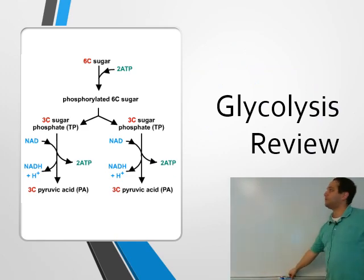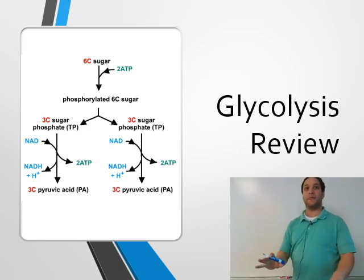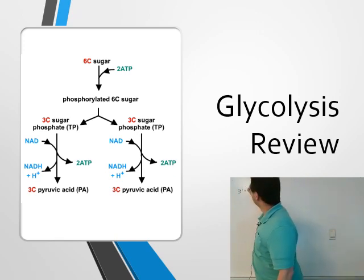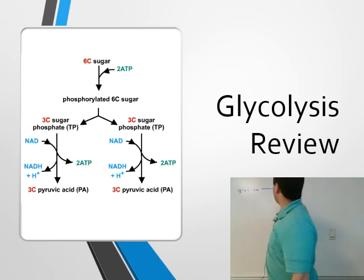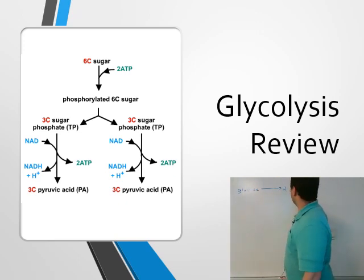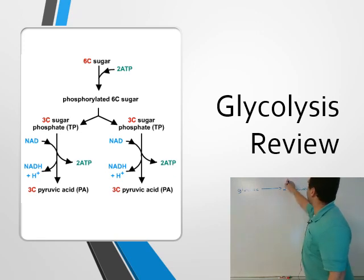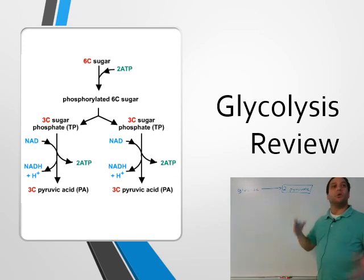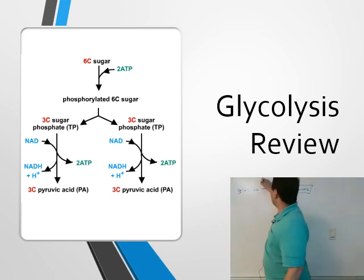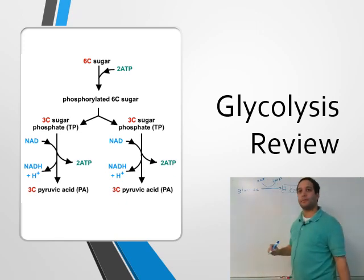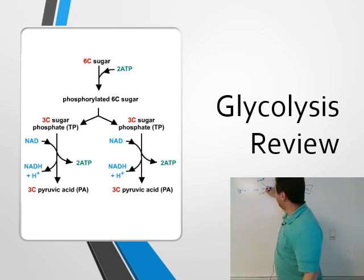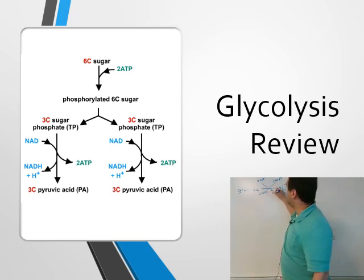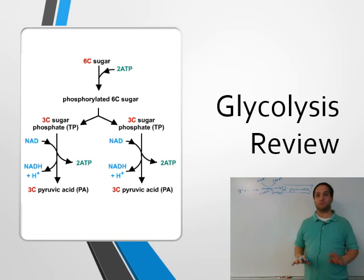Step one is glycolysis. We take glucose and break it in half to produce 2 pyruvate. A net total of two ADP go in and two ATP come out. Two NAD+ go in and two NADH come out.